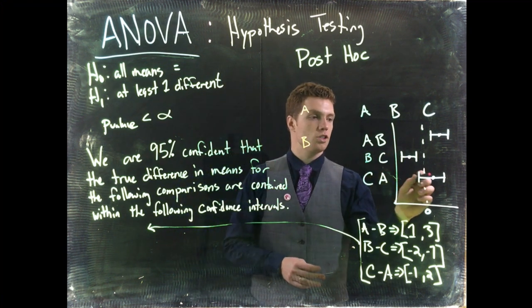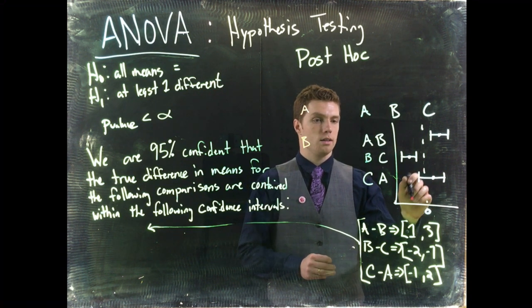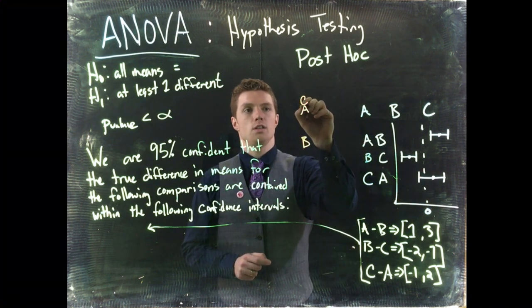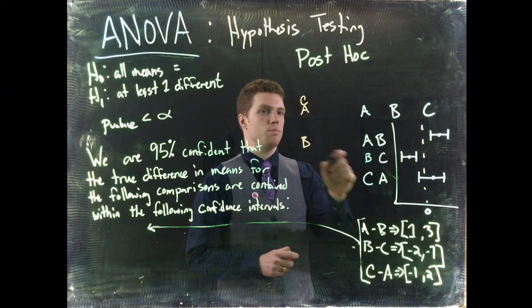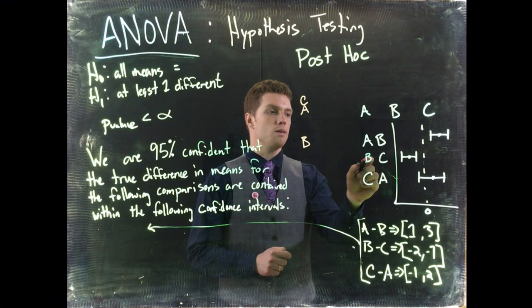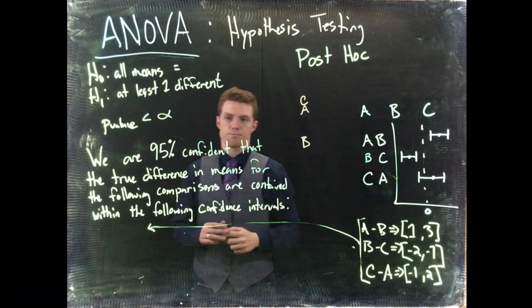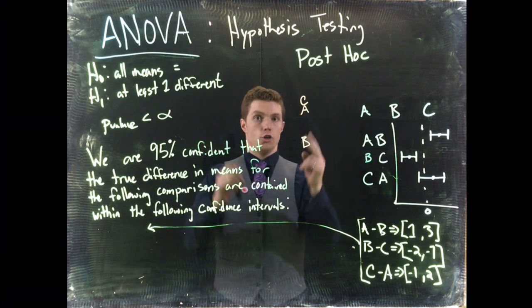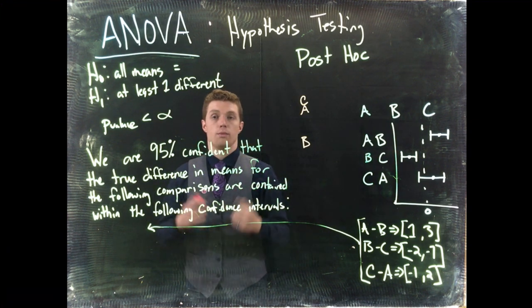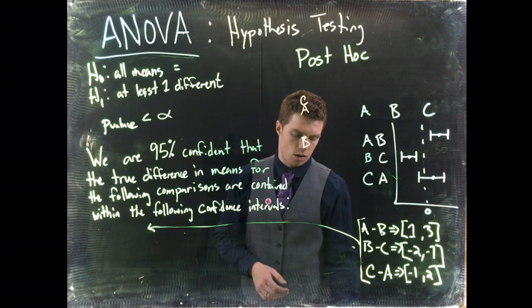Okay, we know that A and C are not shown to be significantly different from one another, so we can put C really close to A. And B and C are shown to be different with B being smaller than C, that's why it's negative. Okay so we've got this grouping right here. We've got two comparisons that are significant, we've got one that is not significant. We really only need to talk about the ones that are significant.